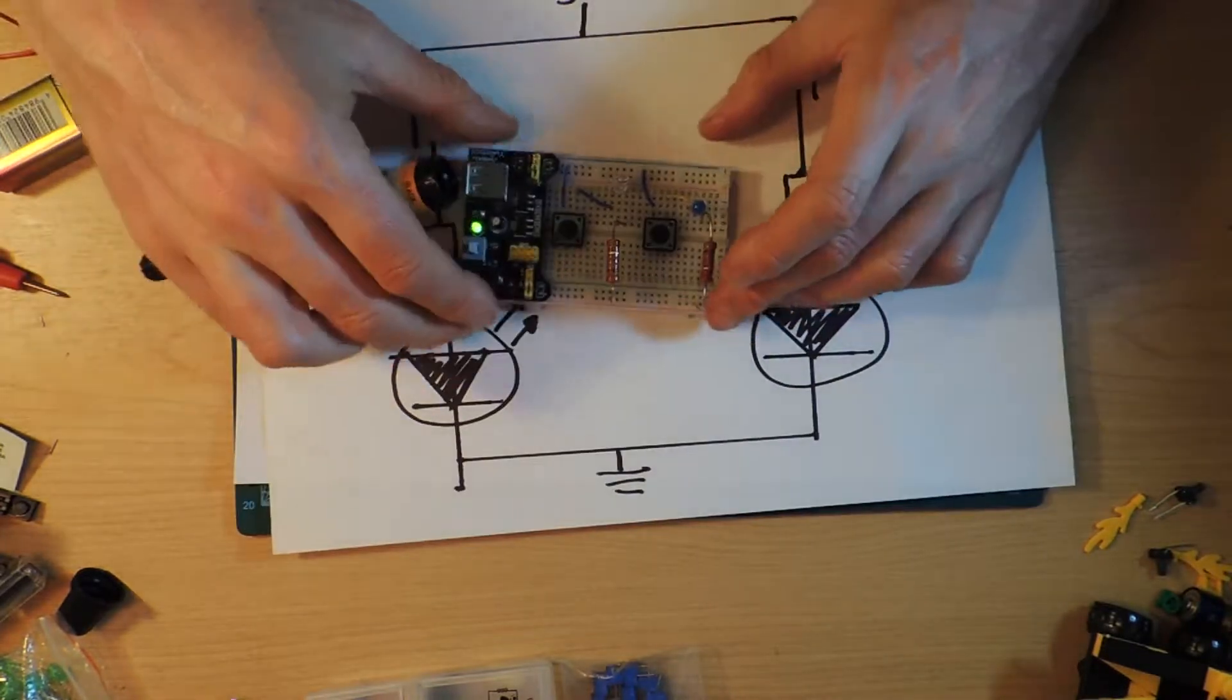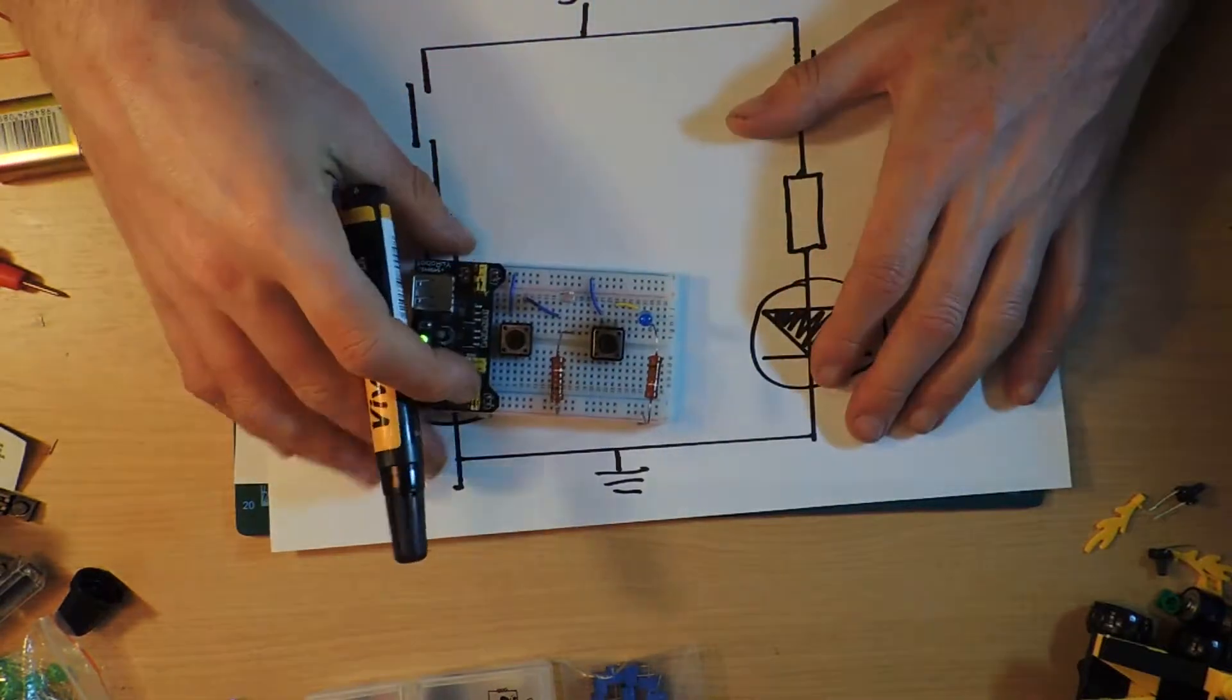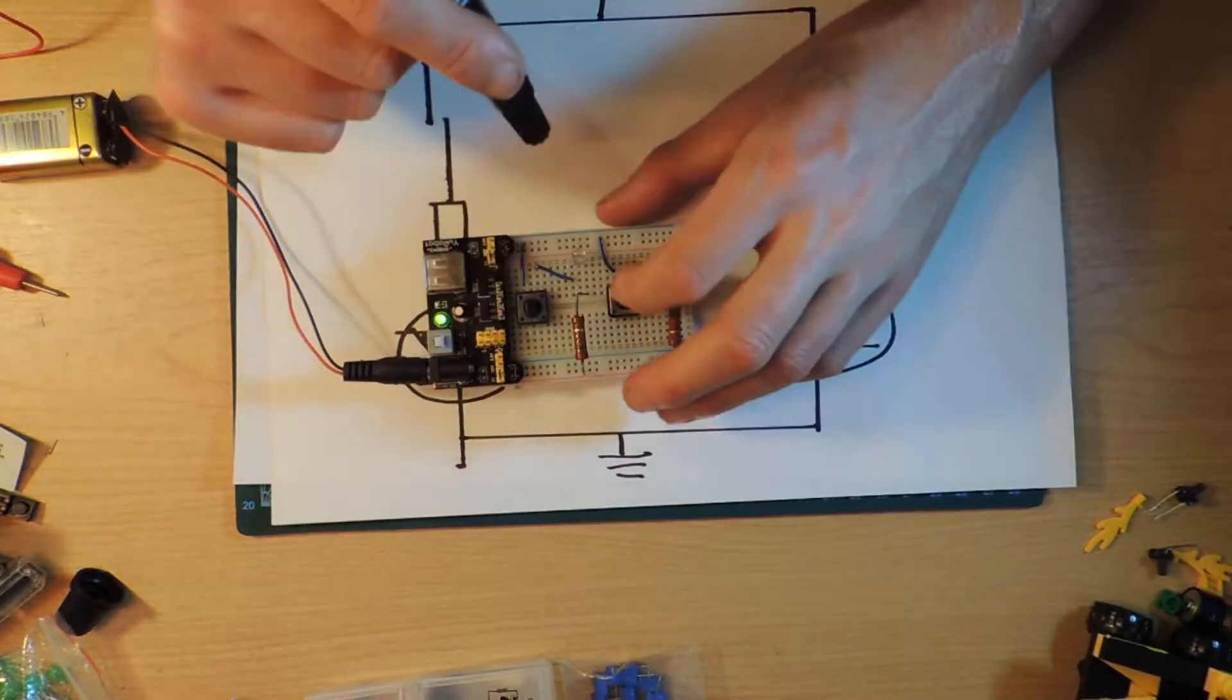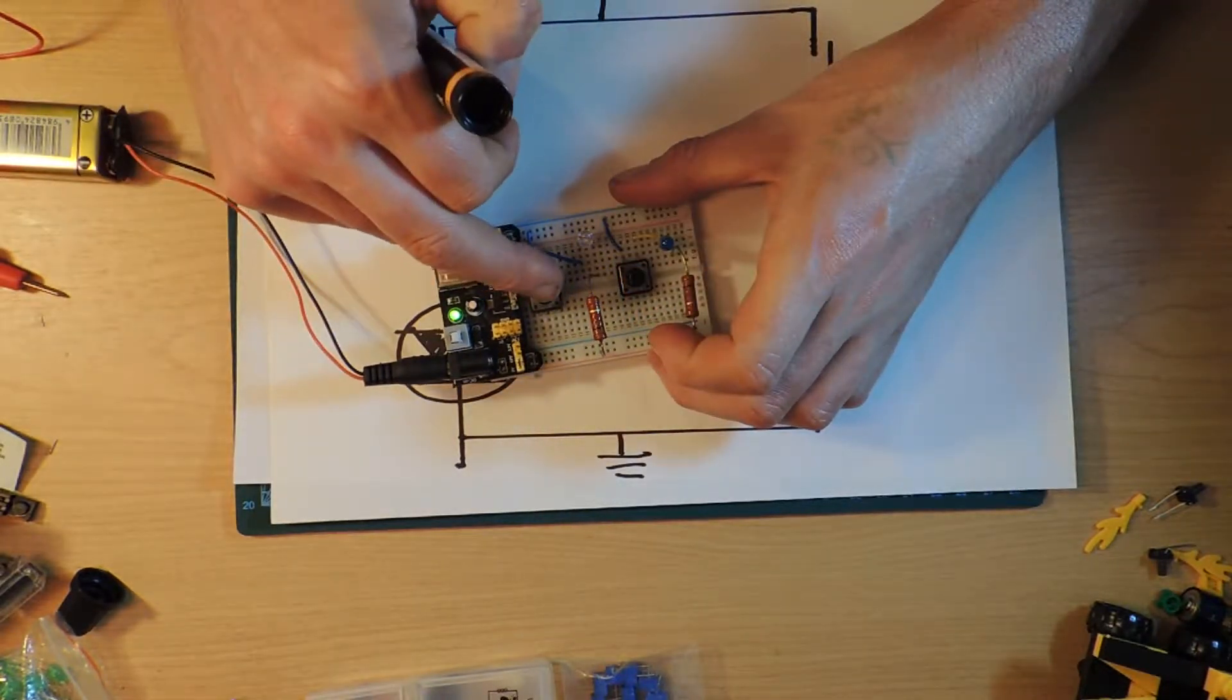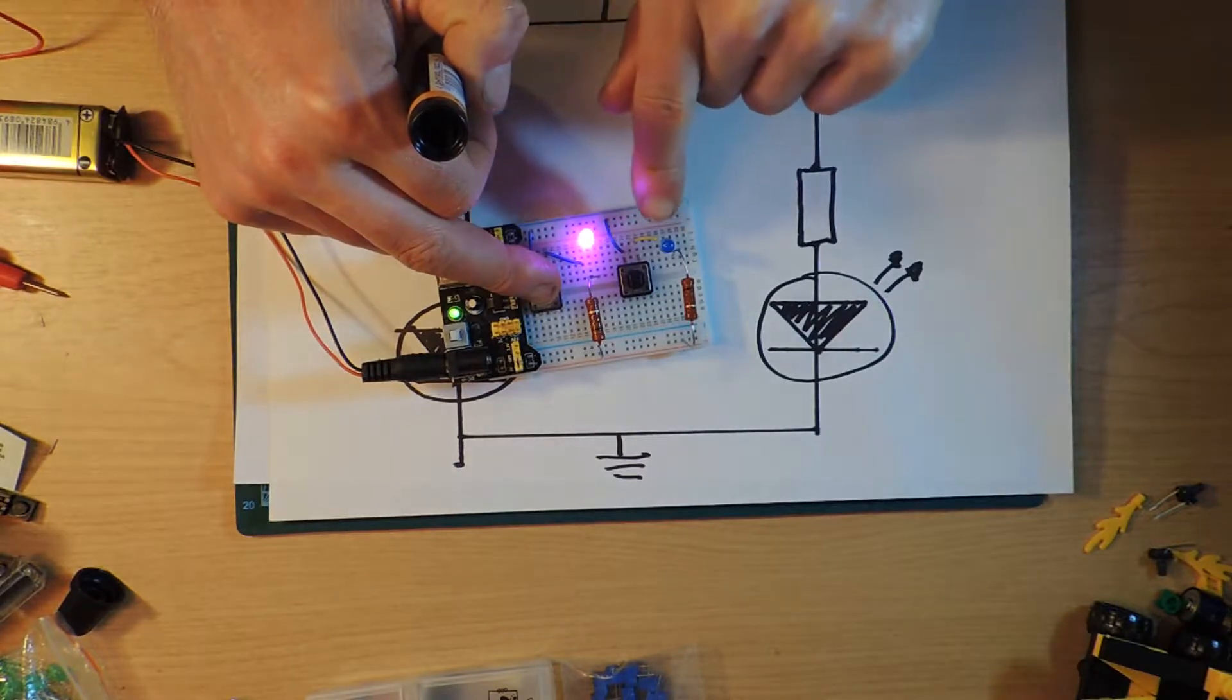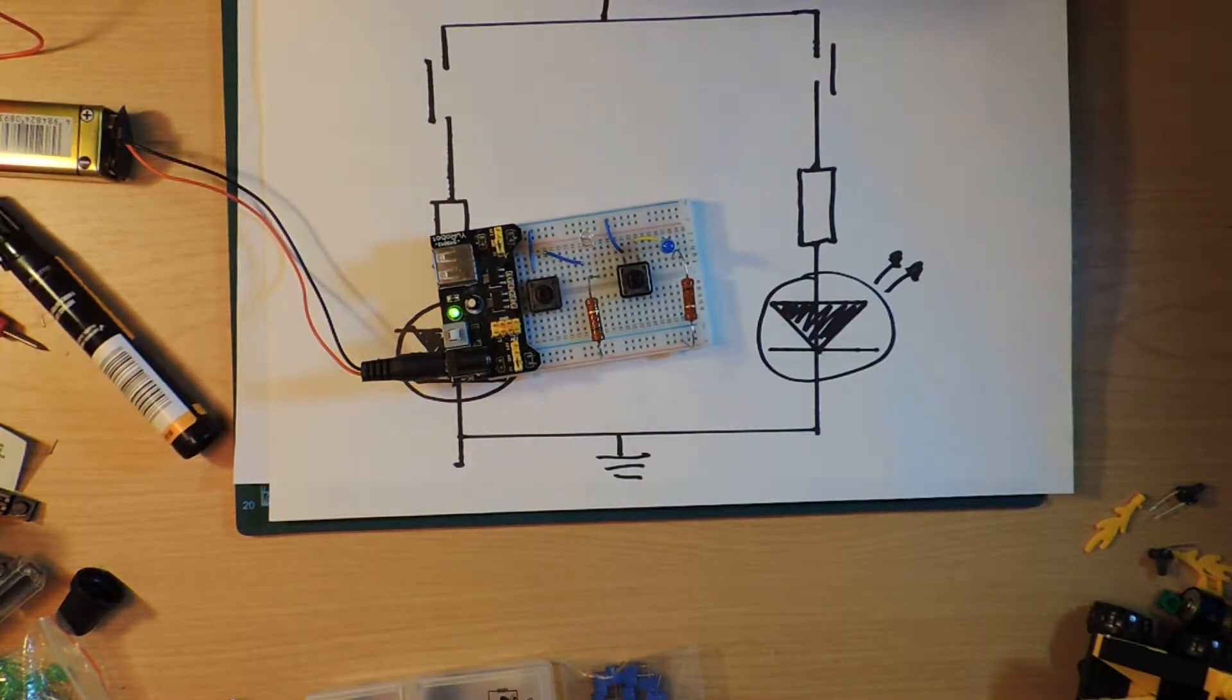But the question that I was trying to answer last time is, I don't want that behavior. I want it so when I press this button, we get a blue light, but when I press this button, I want to get both the lights on at the same time. And just to recap what we did last time, I tried to put an extra wire in.